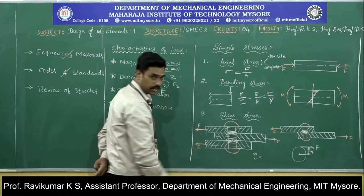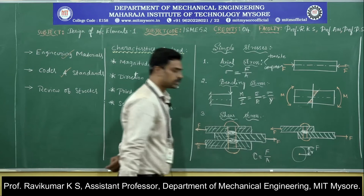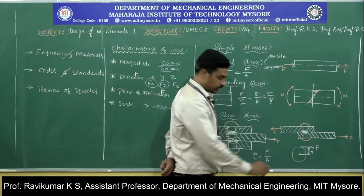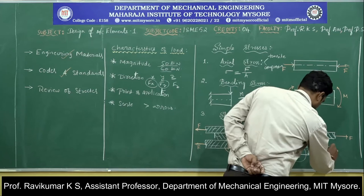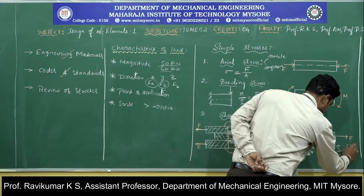Shear stress is represented by tau (τ). Since it is an axial load, shear stress equals shear force divided by area (τ = F/A). For the case of twist or torque, the general torsion equation is T/J = τ/R = Gθ/L.